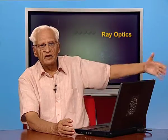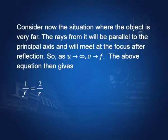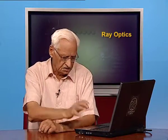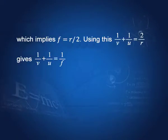If the object is very far off at infinity, then u becomes infinity and v becomes f. Since rays coming from infinity meet at the focus, we get 1/f = 2/R, which gives f = R/2 — the focal length of a concave mirror is half the radius of curvature. Using 2/R = 1/f in the earlier equation, we get the mirror formula: 1/v + 1/u = 1/f. This connects the image distance, object distance, and focal length of the mirror.